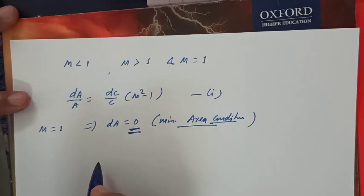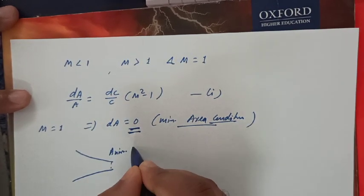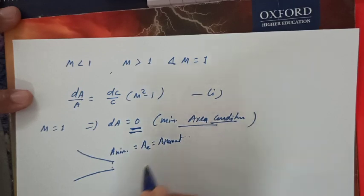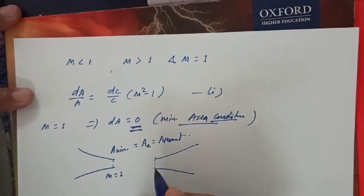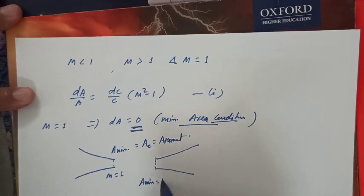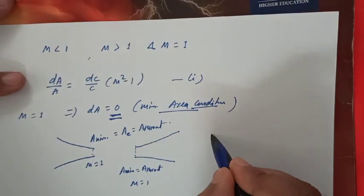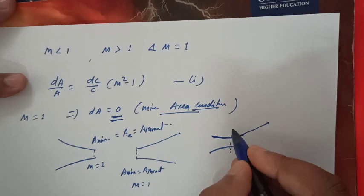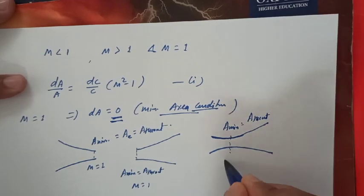What is the minimum area in a converging passage? The exit is the minimum area in a converging passage. The minimum area is also called the throat. So M equal to 1 occurs at the minimum area in the converging passage.